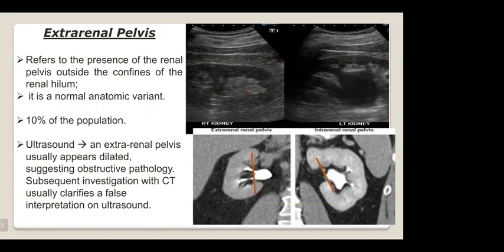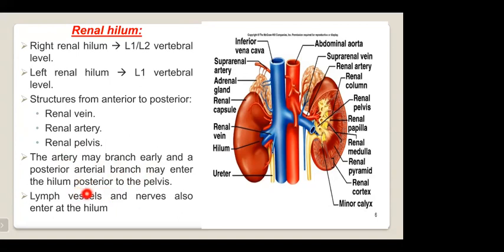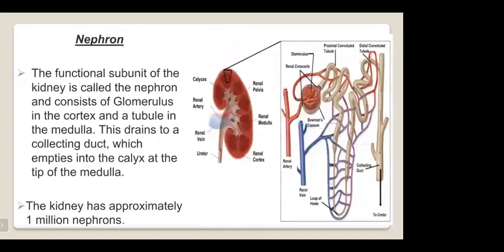The right renal hilum is at the level of L1-L2 vertebral level; the left renal hilum is at the level of L1. Structures in the renal hilum from anterior to posterior are: the renal vein most anteriorly, then the artery in between, and the pelvis most posteriorly. The artery may branch early and the posterior arterial branch may enter the hilum posterior to the pelvis. Lymph vessels and nerves also enter the hilum.